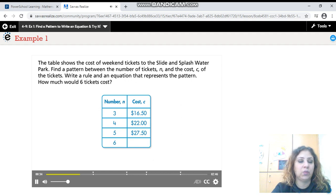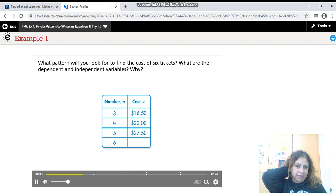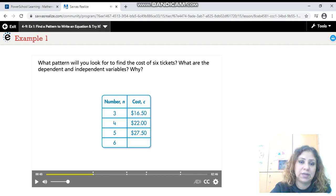We need to write an equation that represents this pattern that is written in this table. What pattern will you look for to find the cost of six tickets? What are the dependent and independent variables? We all know that the cost depends on the number of tickets. So the dependent variable is C and the independent variable is N. We need to find a relationship to write the equation.